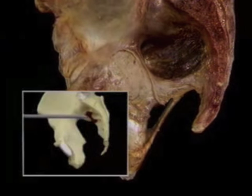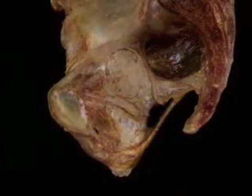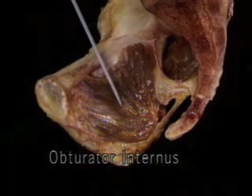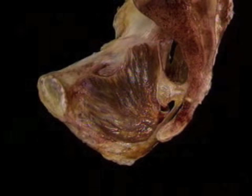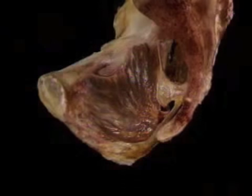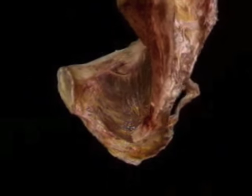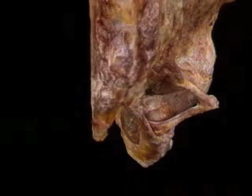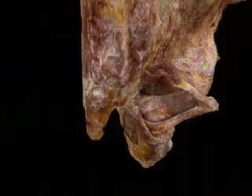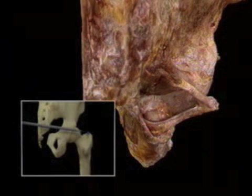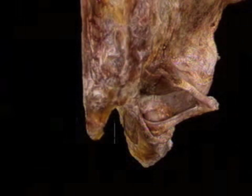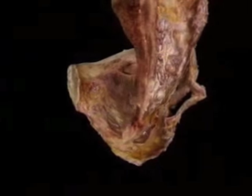Piriformis arises from the sacrum. It passes laterally and leaves the pelvis through the greater sciatic foramen. Next, we'll add obturator internus to the picture. Obturator internus arises from the obturator membrane and from a wide area around it. It leaves the pelvis through the lesser sciatic foramen, making a 90-degree turn around the lower part of the ischium. Piriformis and obturator internus pass laterally to insert on the greater trochanter of the femur. Their actions as lateral hip rotators are shown in volume 2 of this atlas. Here, we're concerned to understand these two muscles simply as parts of the wall of the pelvic cavity.